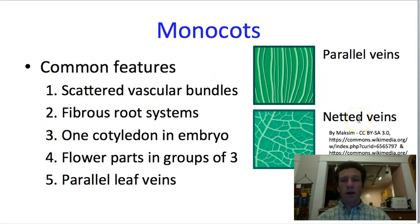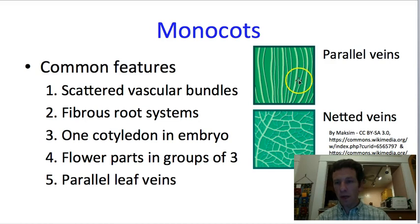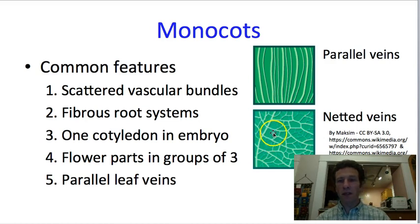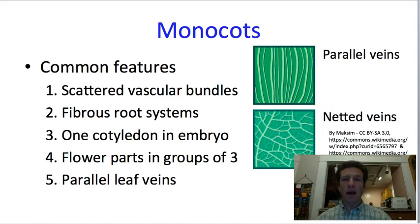The next feature isn't true for all monocots, but many monocots have parallel leaf veins. Parallel means the veins run more or less adjacent without touching neighboring veins, except perhaps at the very base or apex of the leaf. In contrast, dicots typically have netted veins, where veins constantly branch and connect back and forth. There are some monocots with a more netted pattern, so this isn't universal, but parallel veins is the most typical pattern.